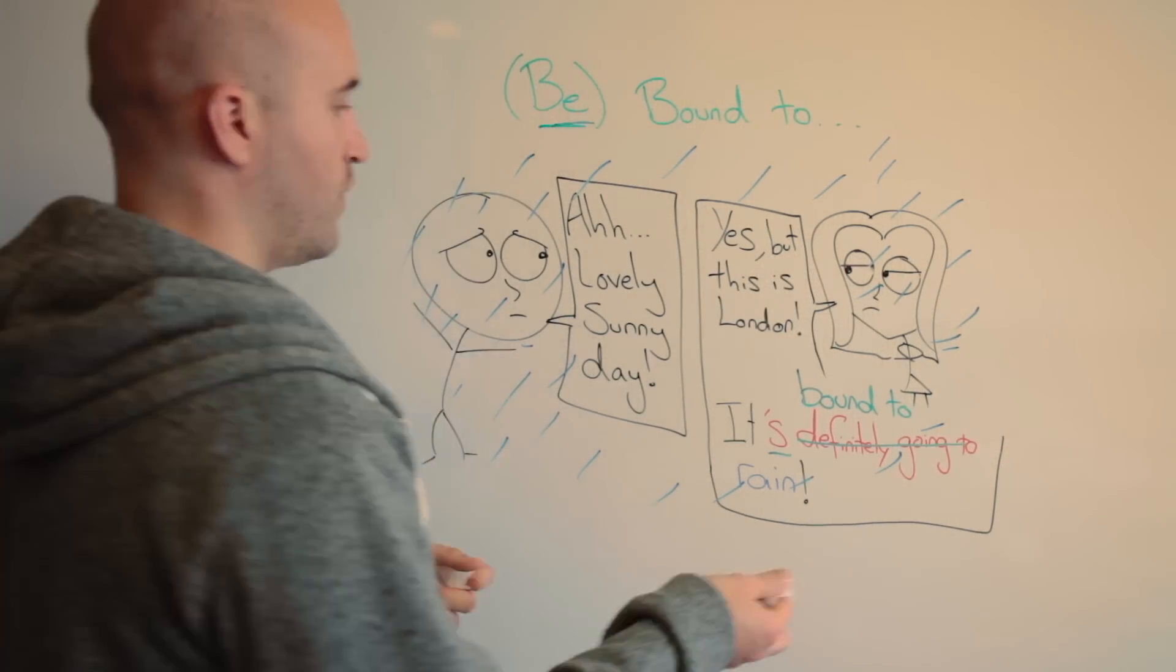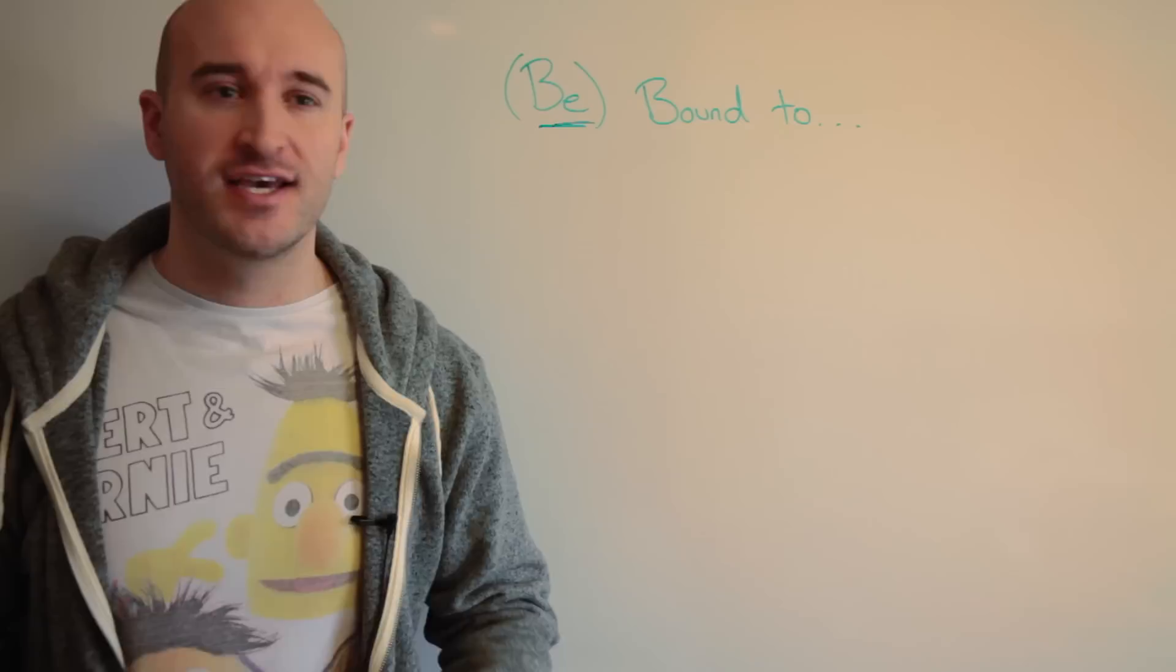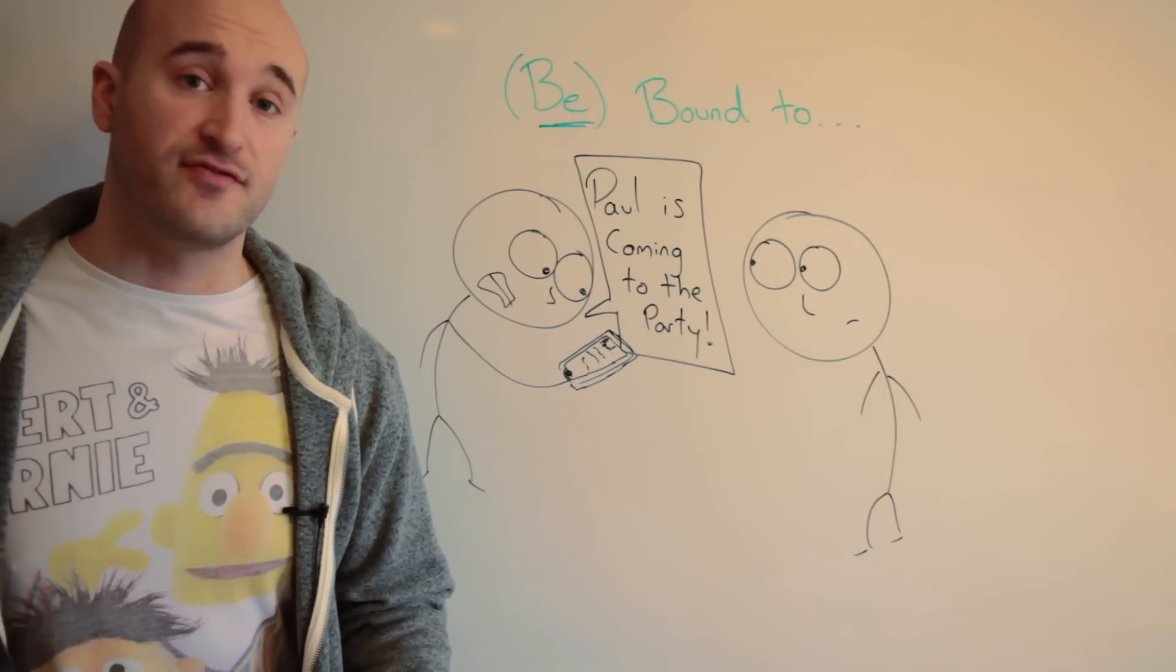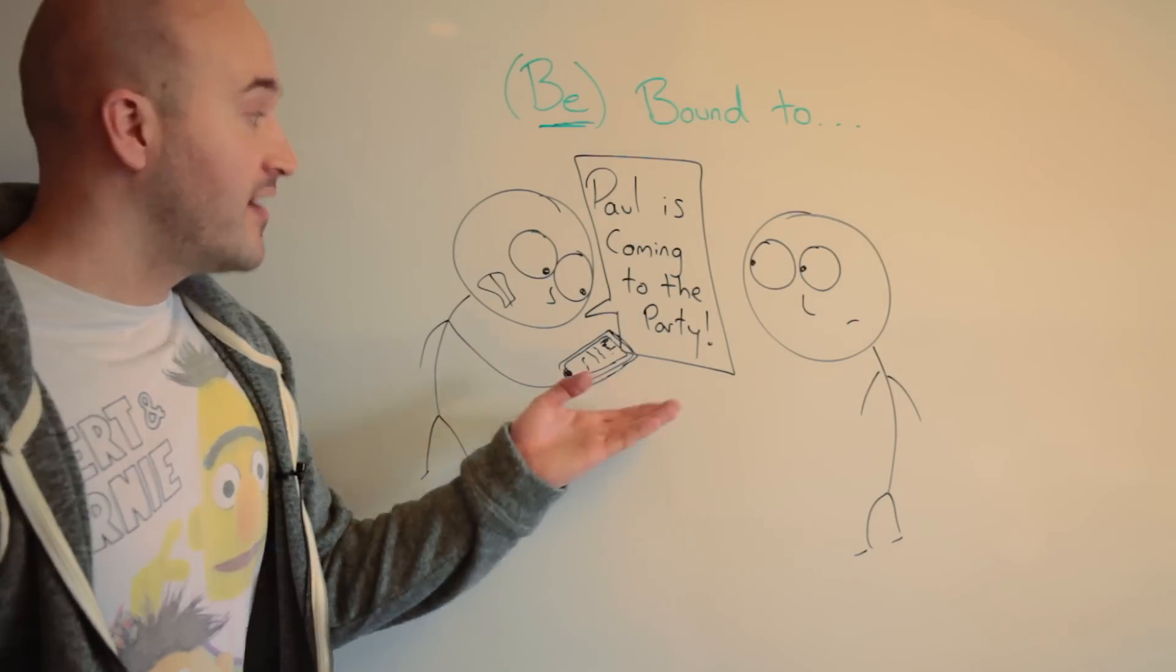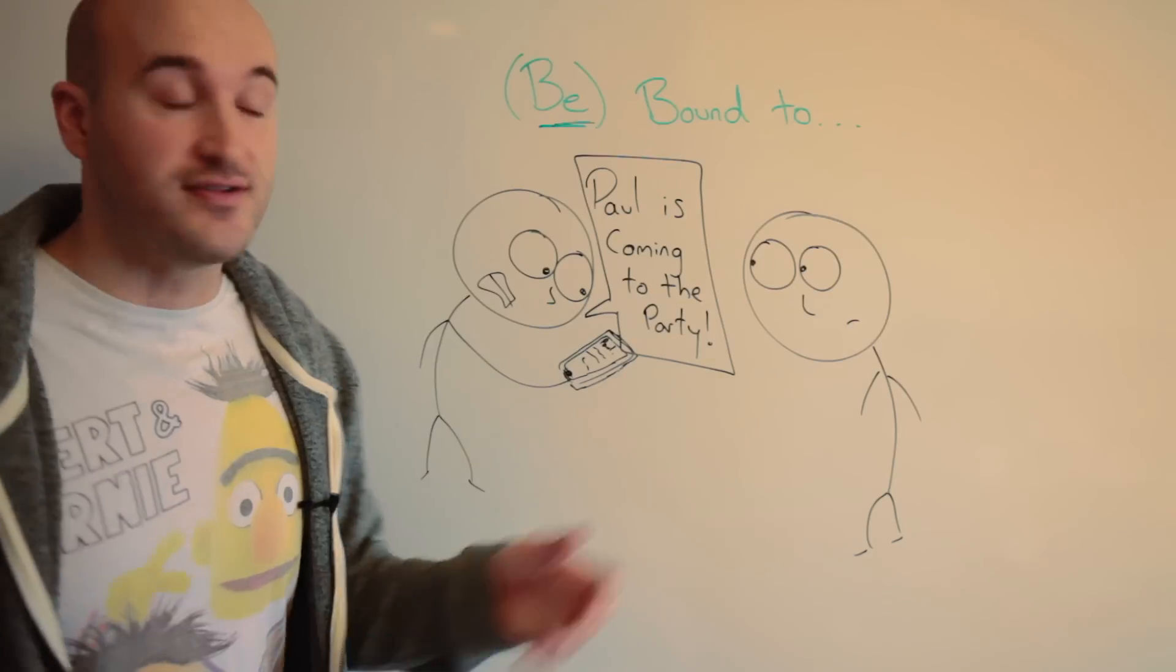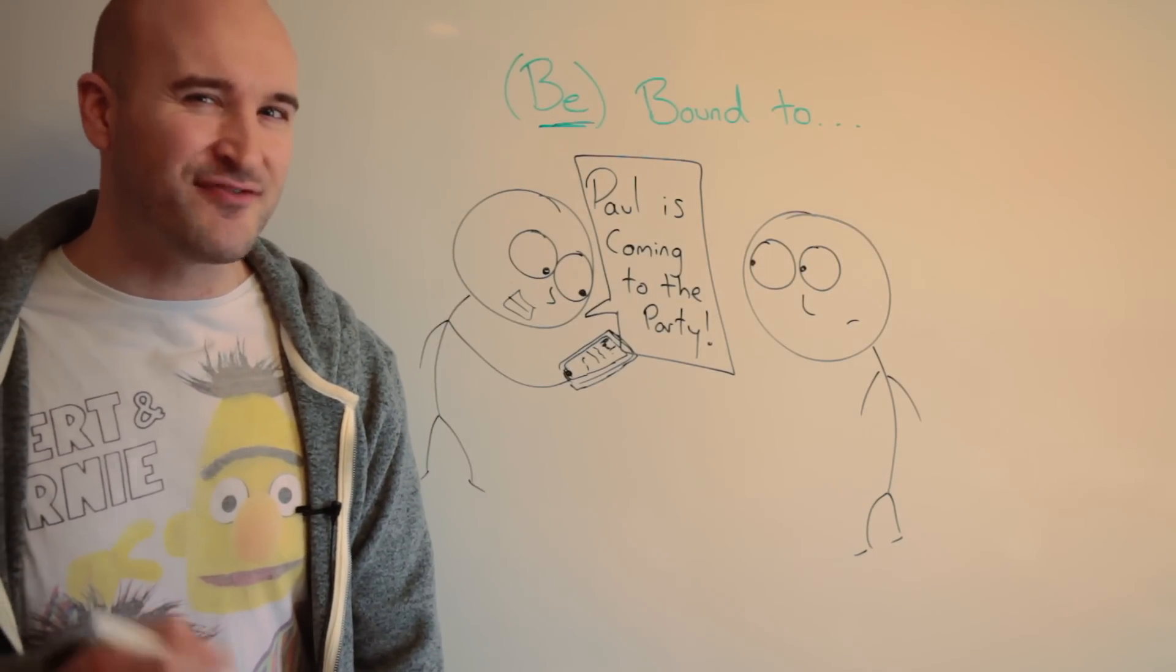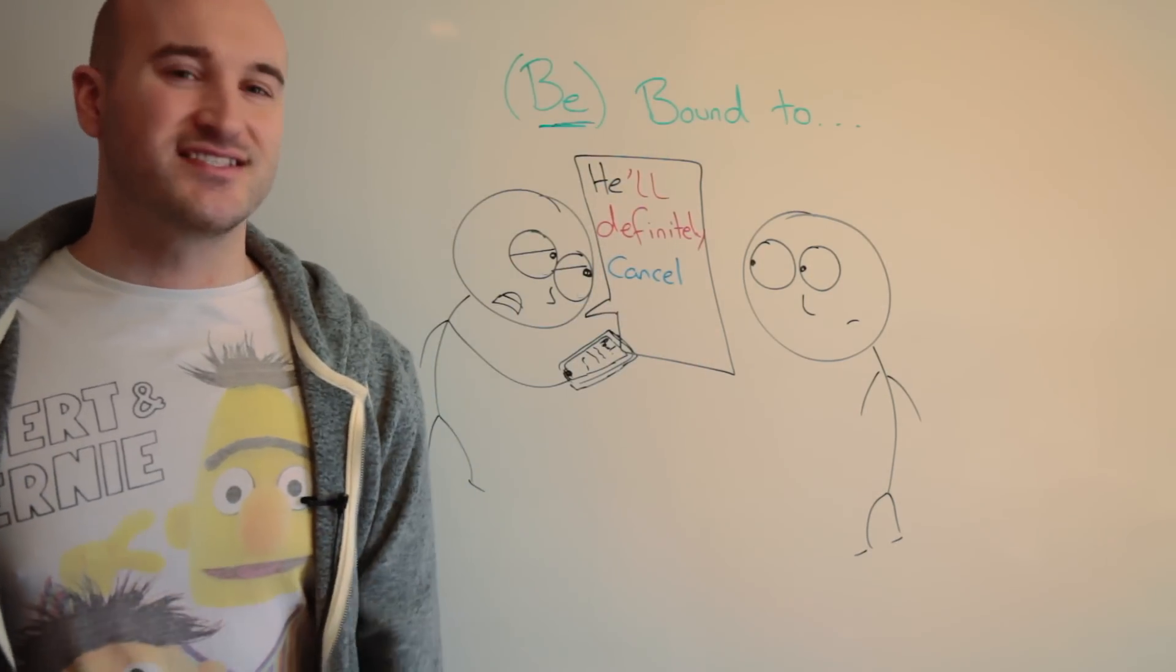Another example. Everyone has that one friend who always cancels. For example, I have an arsehole friend called Paul. And let's say you receive a message from Paul. Ah, Paul's coming to the party. Cool. But then you remember, nah, my friend's an arsehole. And you want to say,